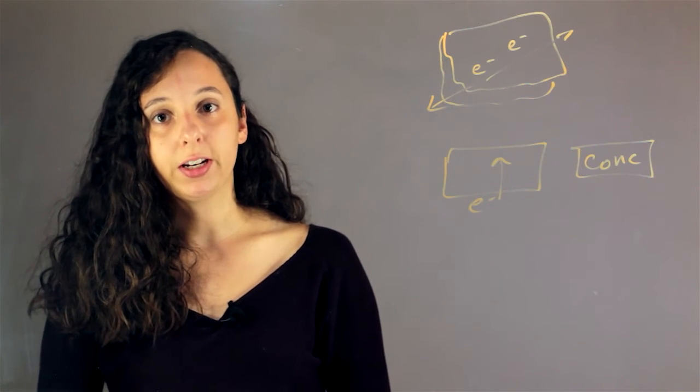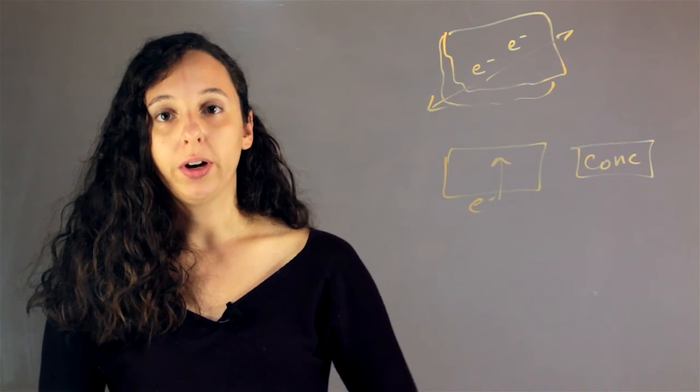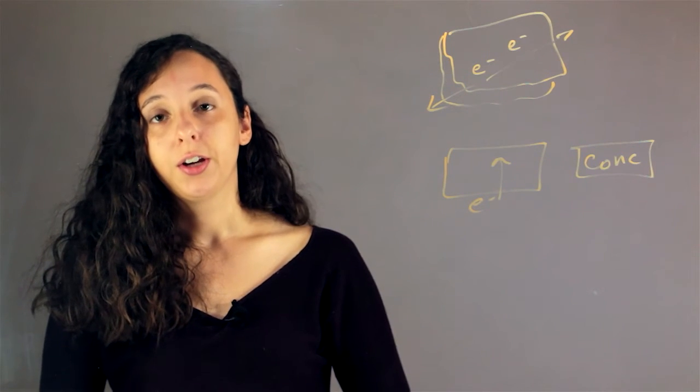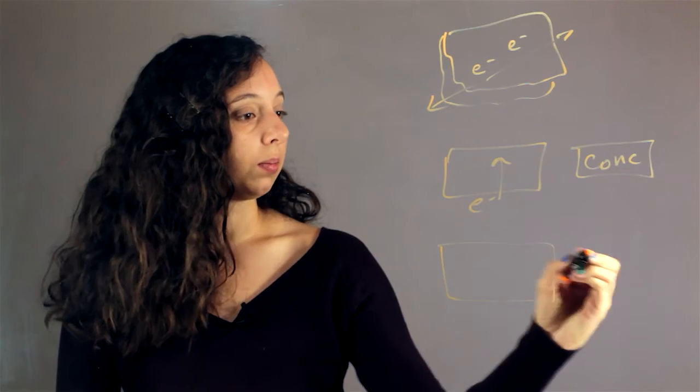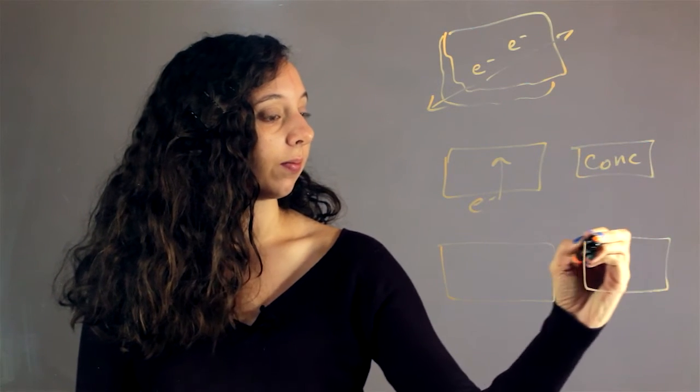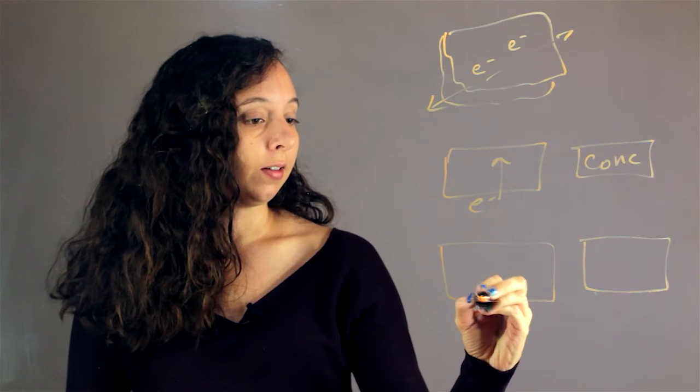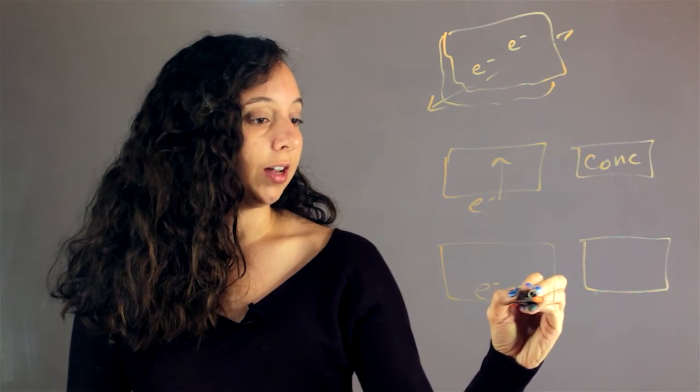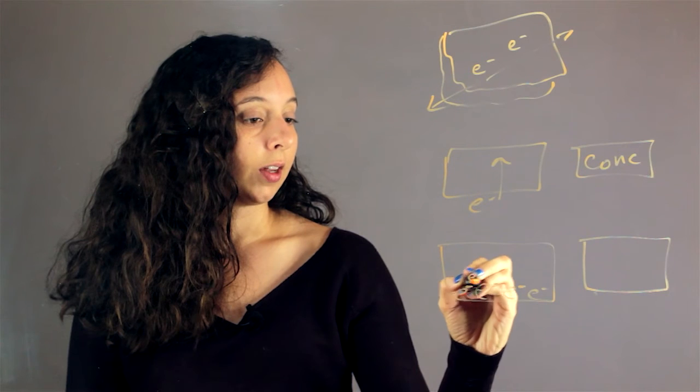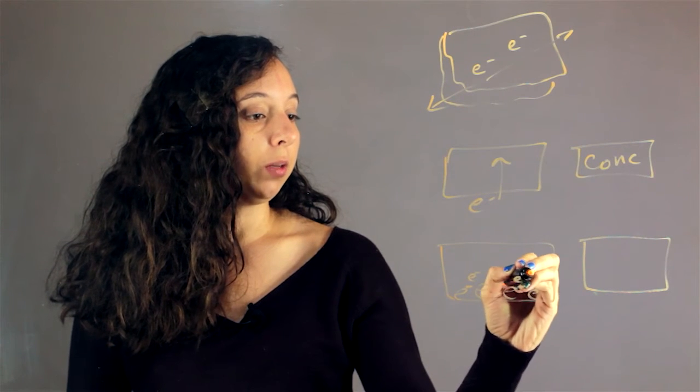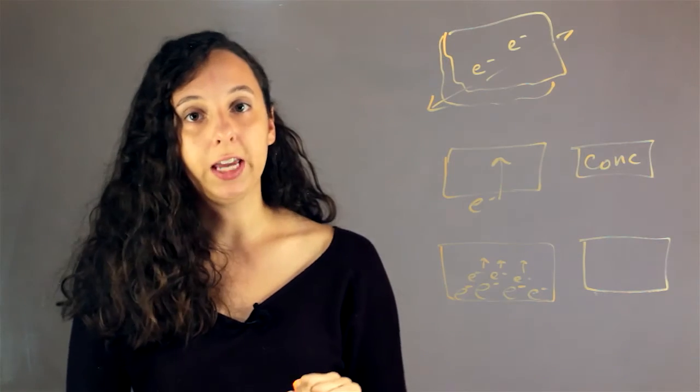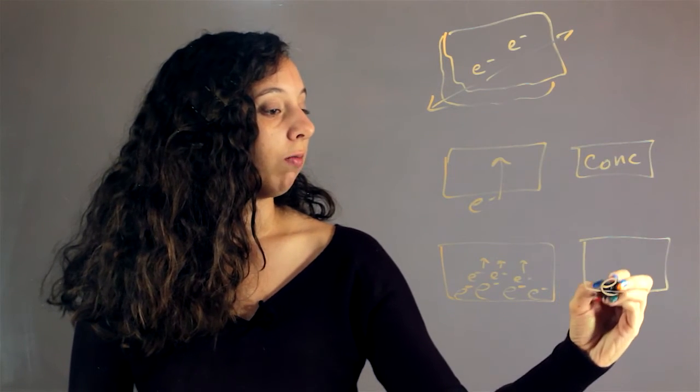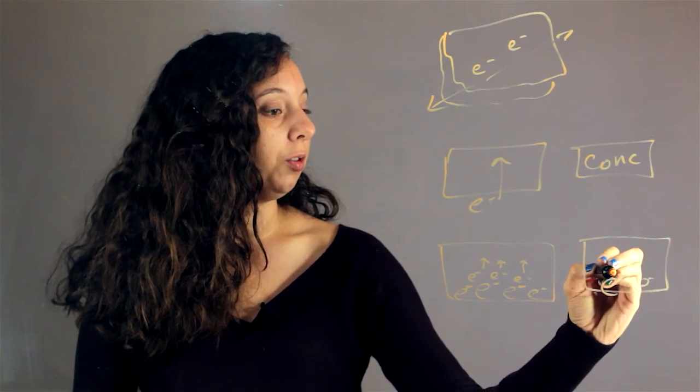So conductivity is basically a joint measure of these two different things. So you can think of two examples. If you have two blocks of metal, and one has a bunch of electrons but they only move very slowly, that will have the same conductivity as a metal with only a couple of electrons that move really fast.